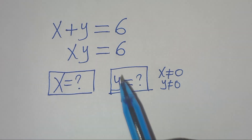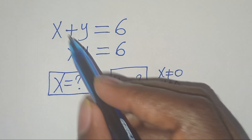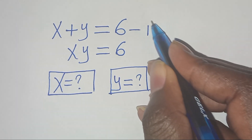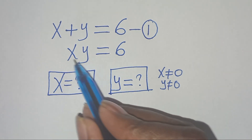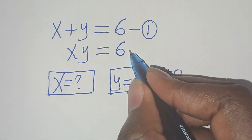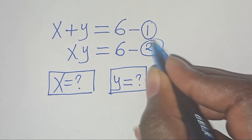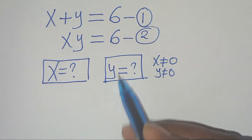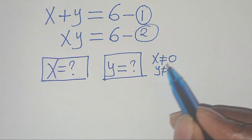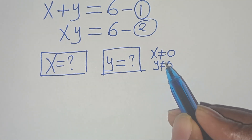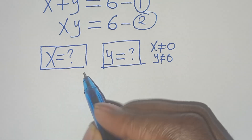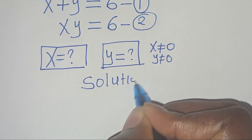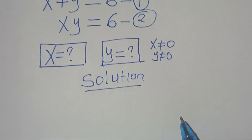Hello everyone, you're welcome to solve this nice algebra problem. We have x plus y equals 6 — let's call this equation 1. And x times y equals 6 — let's call this equation 2. We want to find the value of x and the value of y, given that x is not equal to 0 and y is not equal to 0.